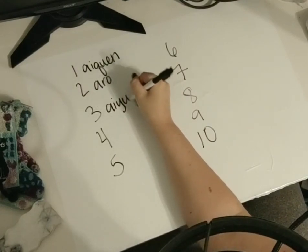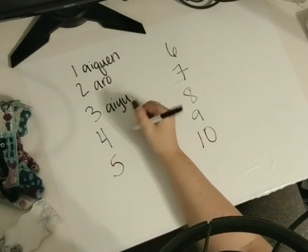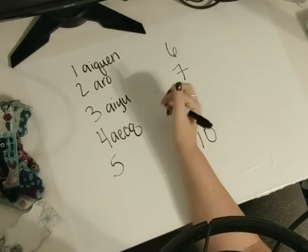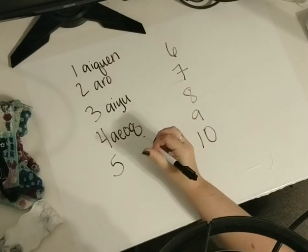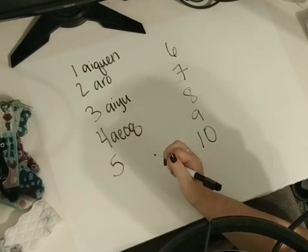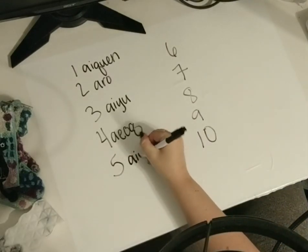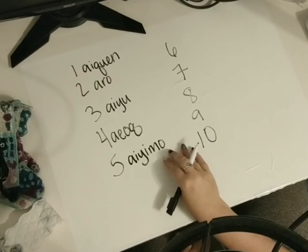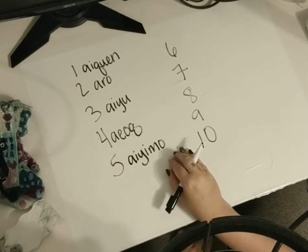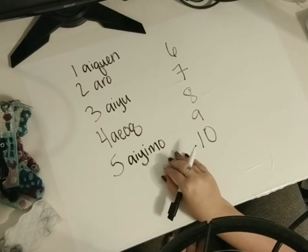Three is Aiyu. Four is Aiyuk. Five is Aiyuma. Seven and eight were really tricky — literally every source I found had about four different spellings of each word.